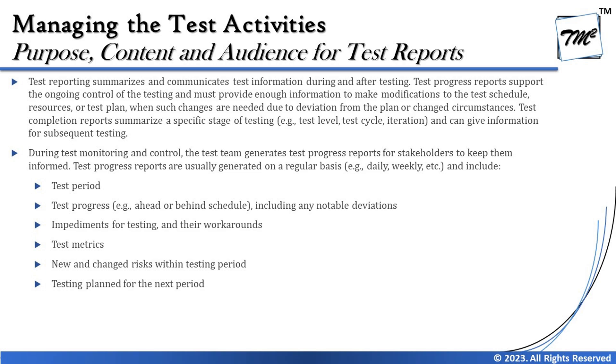The report also covers new and changed risks within the testing period. As discussed in section 5.2, risks are not analyzed only once at the beginning — it is a consistent activity to monitor emerging risks as the product evolves. Finally, the test progress report includes testing plans for the next period, so for example after sprint one you can reflect your planned actions for sprint two.